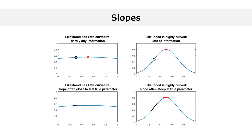In the left plot, the likelihood has little curvature and the slope is close to zero. In the right plot, the likelihood is highly curved and the slope at the true parameter is often large in absolute value. In both cases, the average magnitude of the slope of the likelihood at the true parameter is a measure of the information provided by the observed data.